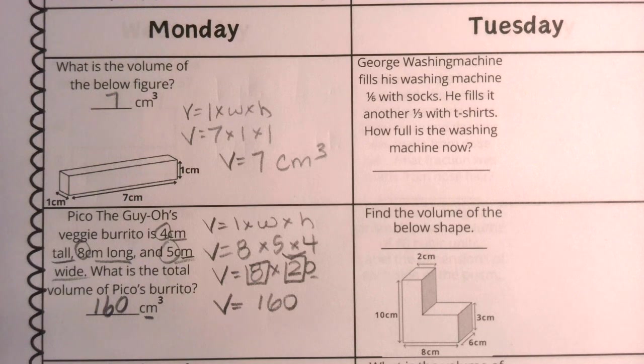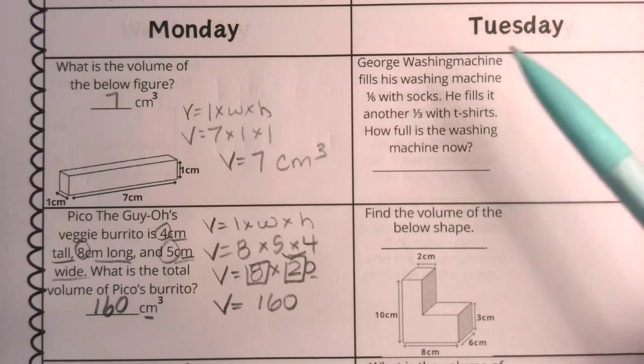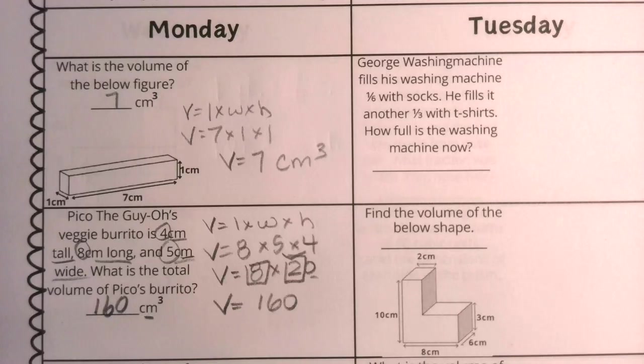Good morning, mathematicians. It's Tuesday of week five, and we are starting out with some fractions. This says George Washing Machine fills his washing machine with one-sixth socks. One-sixth of the washing machine is filled with socks. He fills another one-third with t-shirts. How full is the washing machine now?